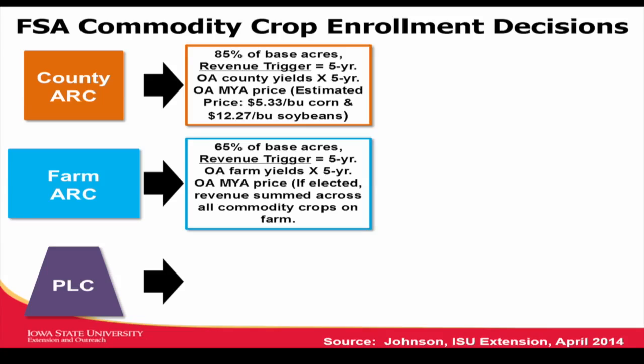Separate ARC and it's a simple process. ARC has an R — it's a revenue trigger. It's different than PLC. PLC, price loss coverage, has a P — it's only triggered by prices. The prices have to fall one of the next five years below the reference prices. That's $3.70 a bushel for corn, $8.40 a bushel for soybeans, $5.50 a bushel for wheat. So the major commodity crops each have a reference price.